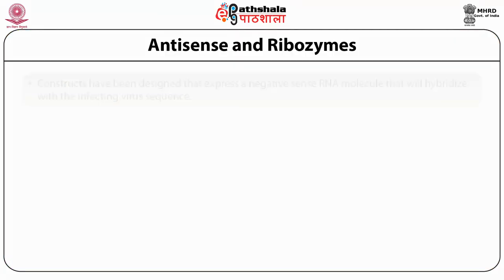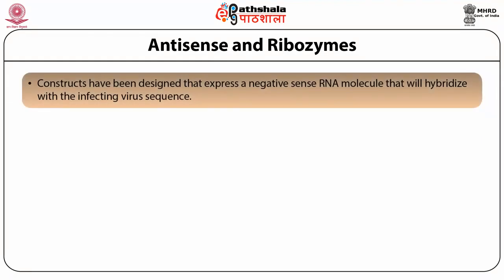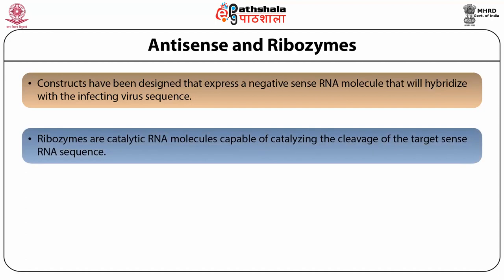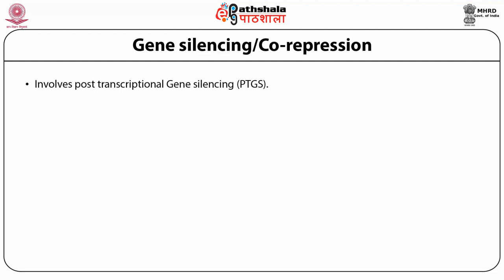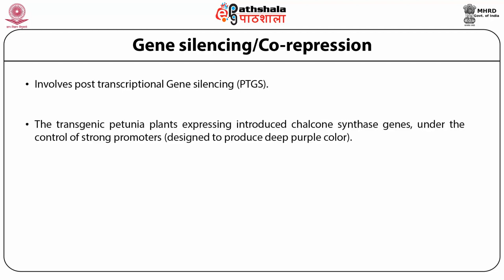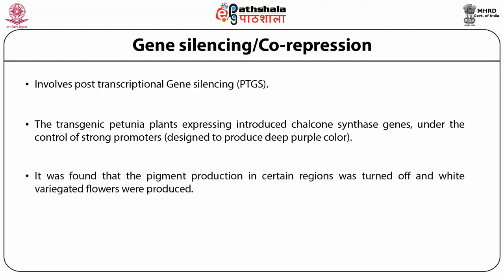Antisense constructs express negative-sense RNA molecules that hybridize with infecting virus sequences, while ribozymes are catalytic RNA molecules capable of cleaving target sense RNA sequences. Both aim to block viral replication through double-stranded RNA hybrid formation and to cut key regions of the viral genome before replication occurs. Gene silencing involves post-transcriptional gene silencing (PTGS). In transgenic petunia plants expressing an introduced chalcone synthase gene under a strong promoter, pigment production in certain regions was turned off, producing white variegated flowers.